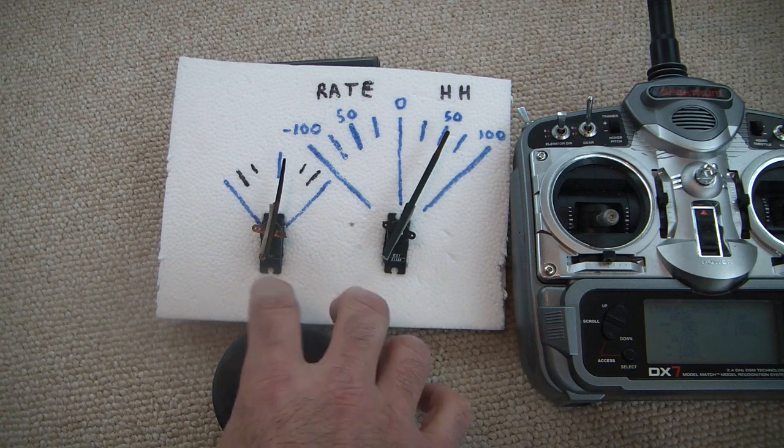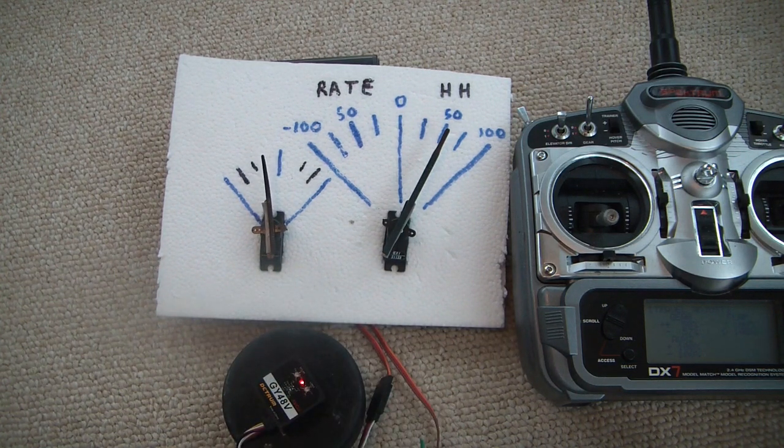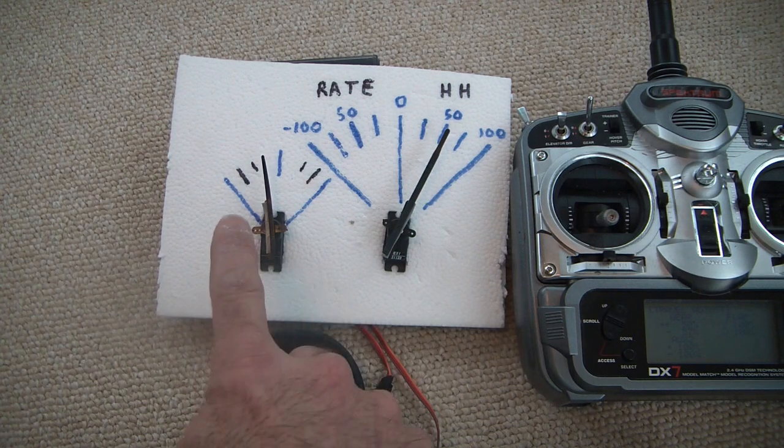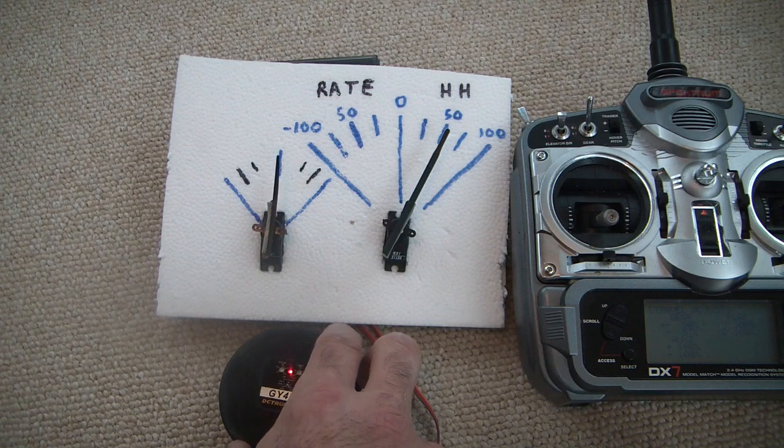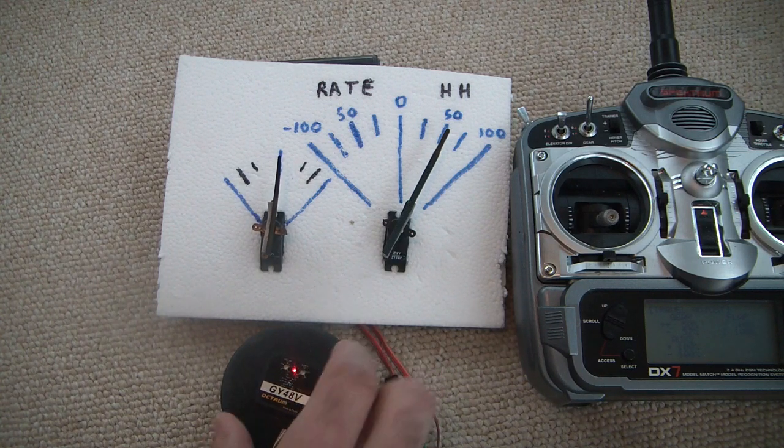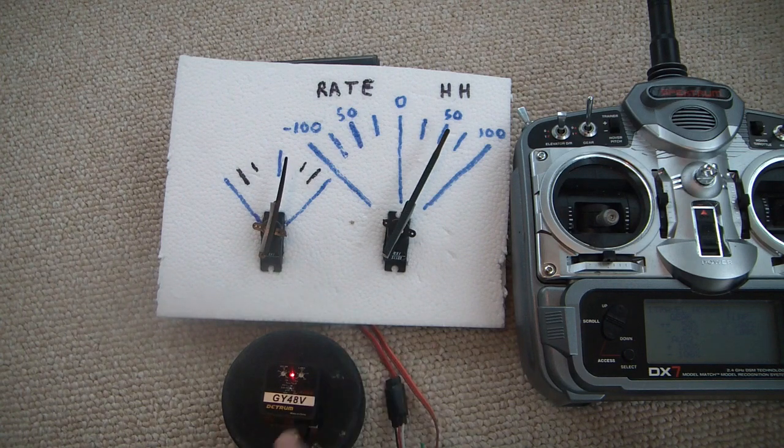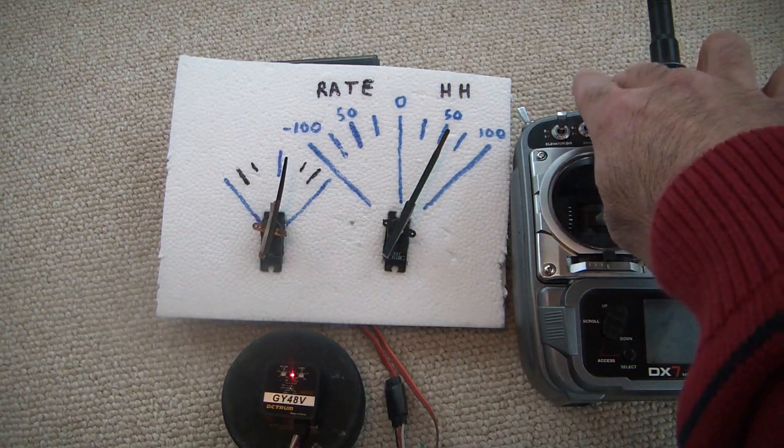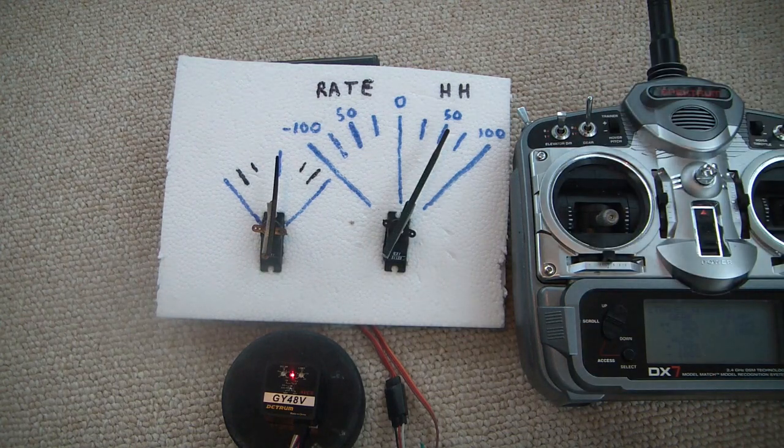So if I rotate this clockwise, that servo is going to move in the other direction and it's going to stay there. It's in heading hold. It's trying to keep making a control movement until that gyro comes back. Now in this particular case, it's not going to come back perfectly to center every time. I can center that up by bringing it back and forth just like that.